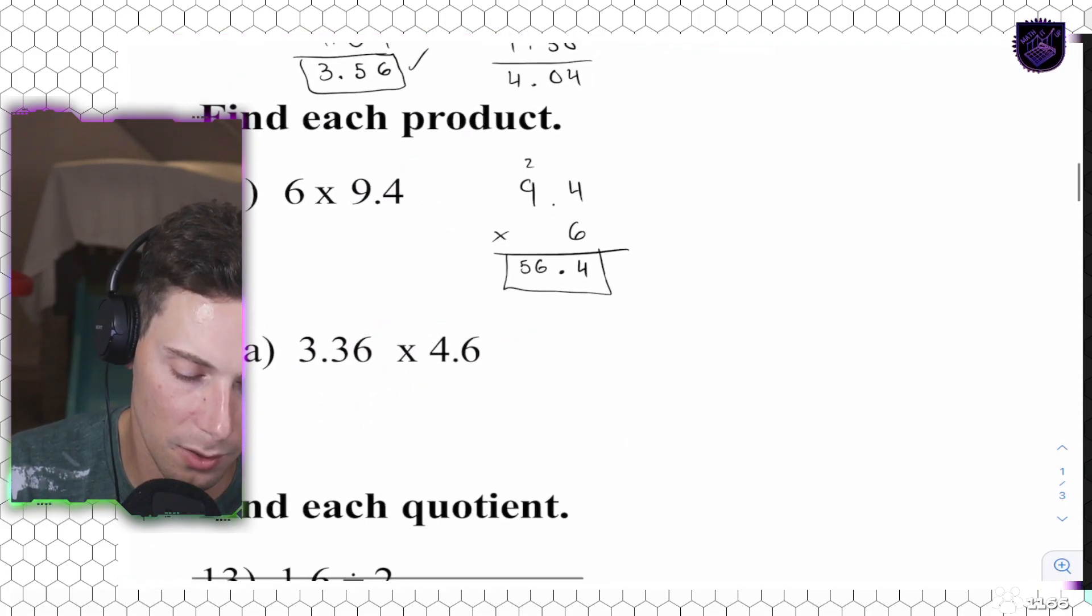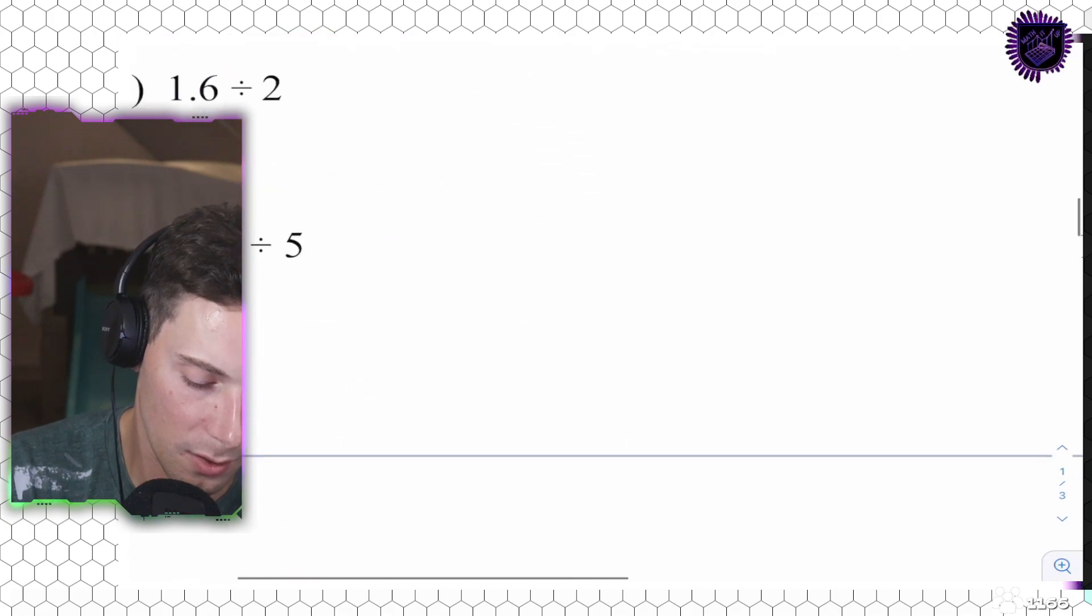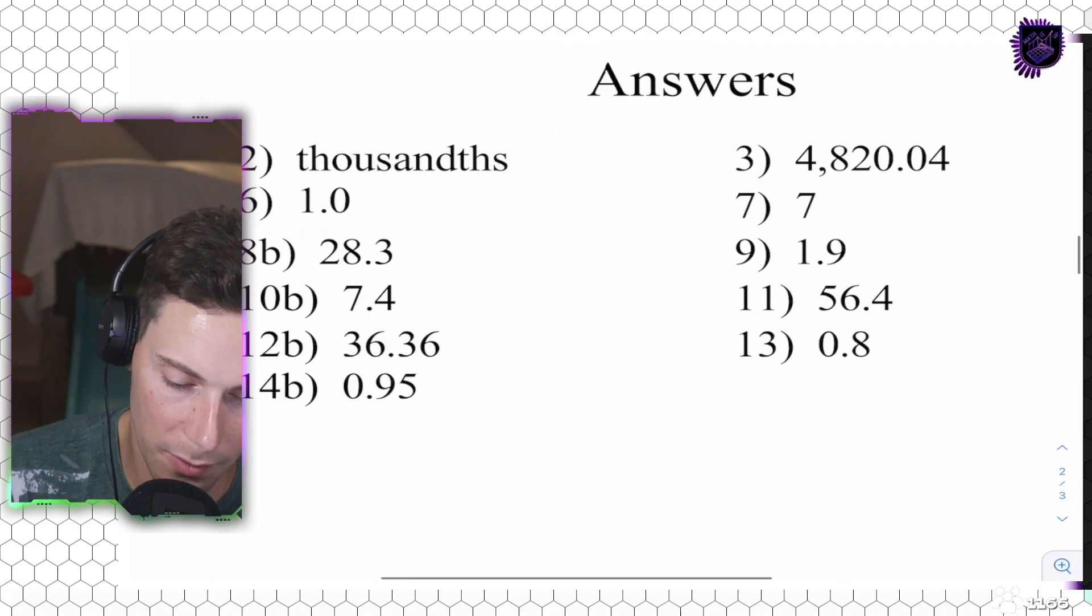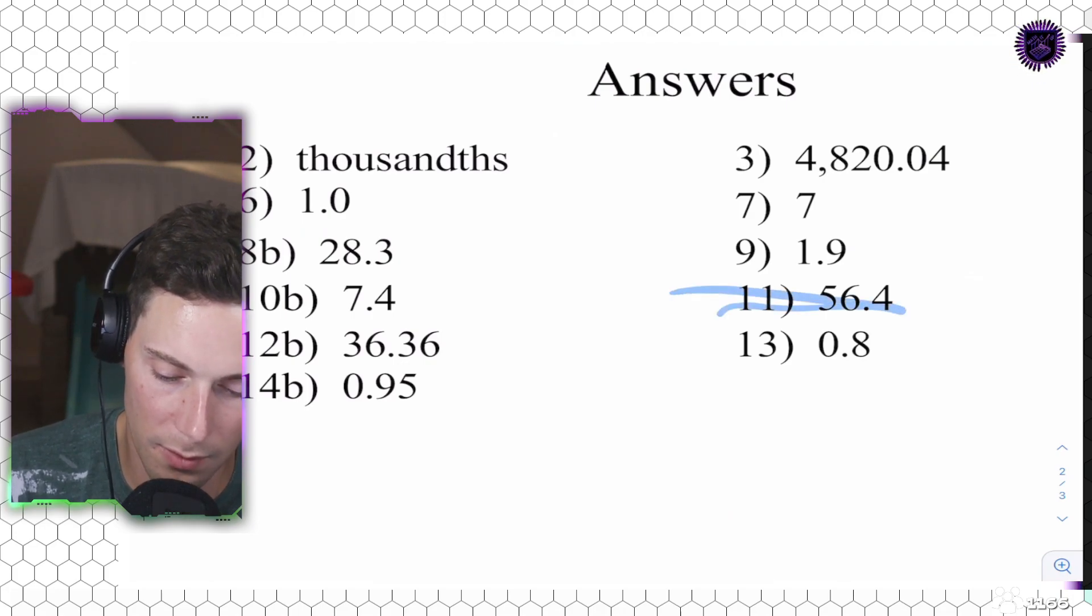So, let's go through this. 9.4 times 6. So, 6 times 4 is going to be 24. Put the 4. Carry the 2 to add after. 9 times 6 is going to be 54.